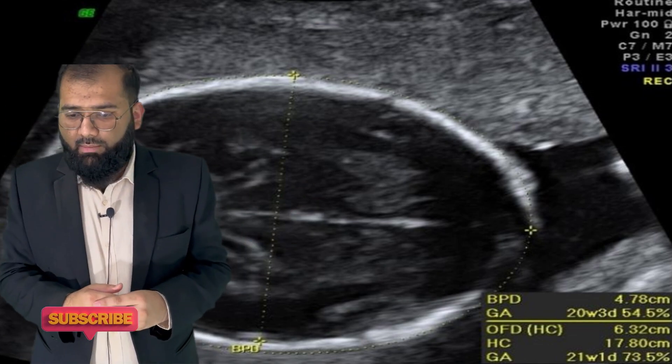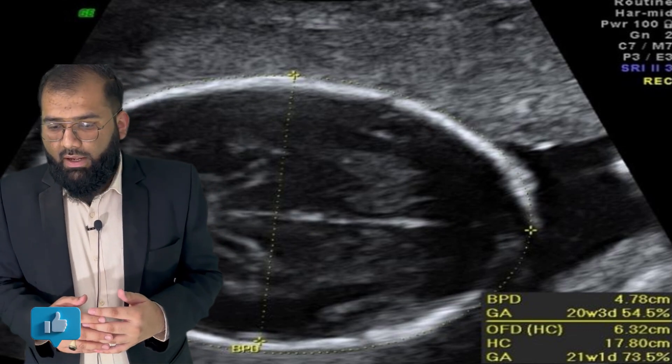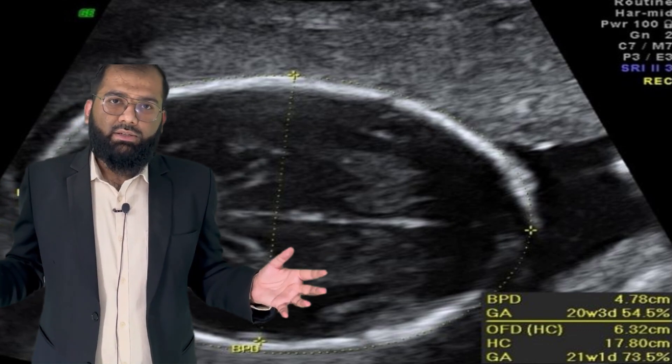Here in the image you can see that BPD corresponds to 47 mm, corresponding to 20 weeks and 3 days. Thank you.